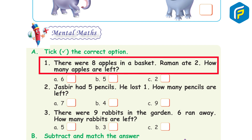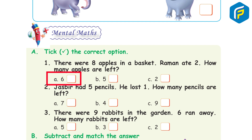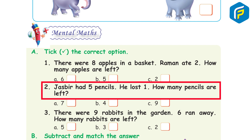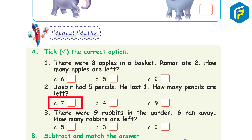There were 8 apples in a basket; Raman ate 2. How many apples are left? Answer: 6. Jaspir had 5 pencils; he lost 1. How many pencils are left?